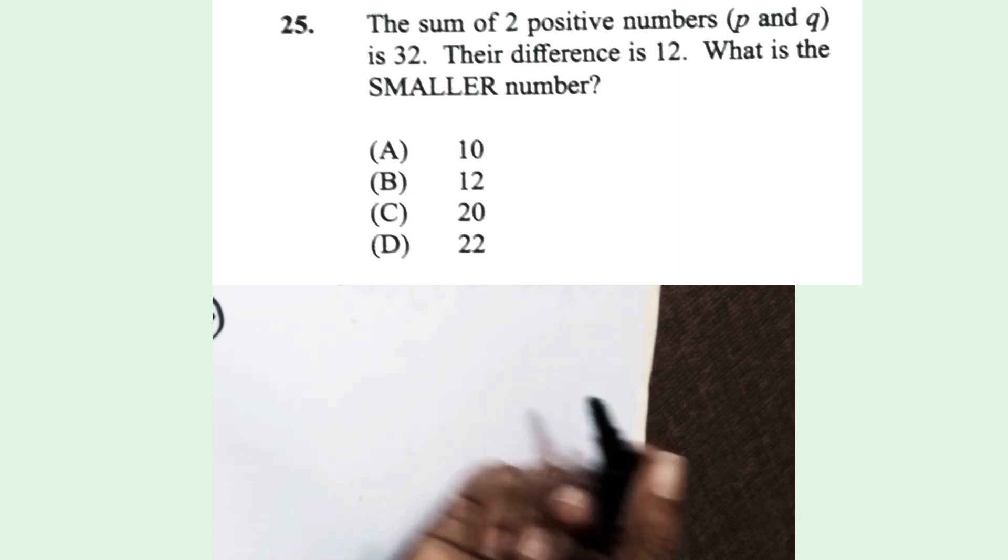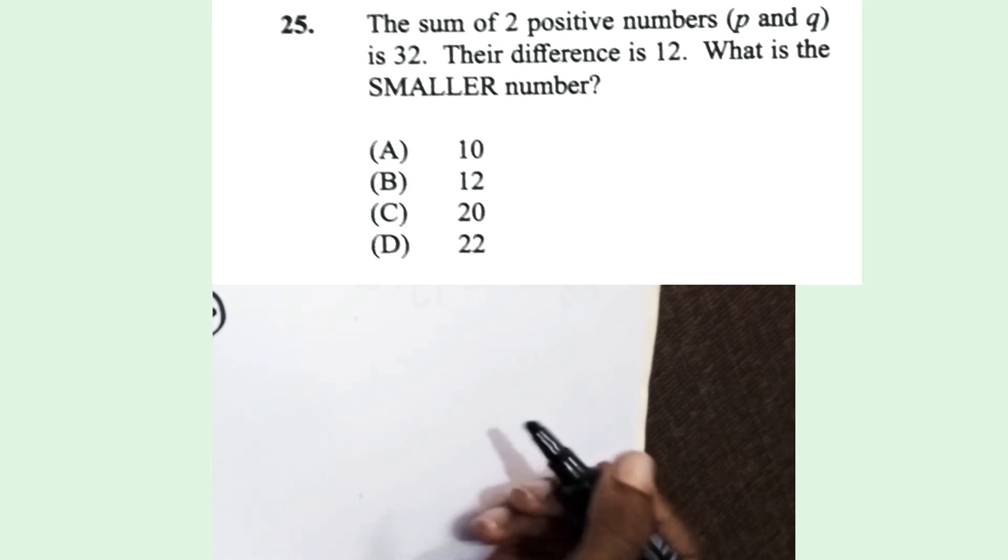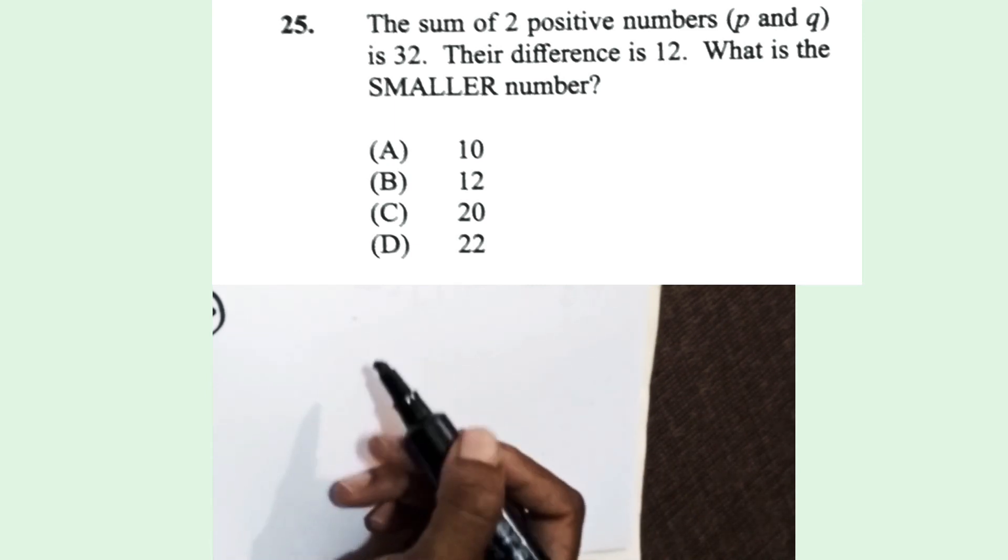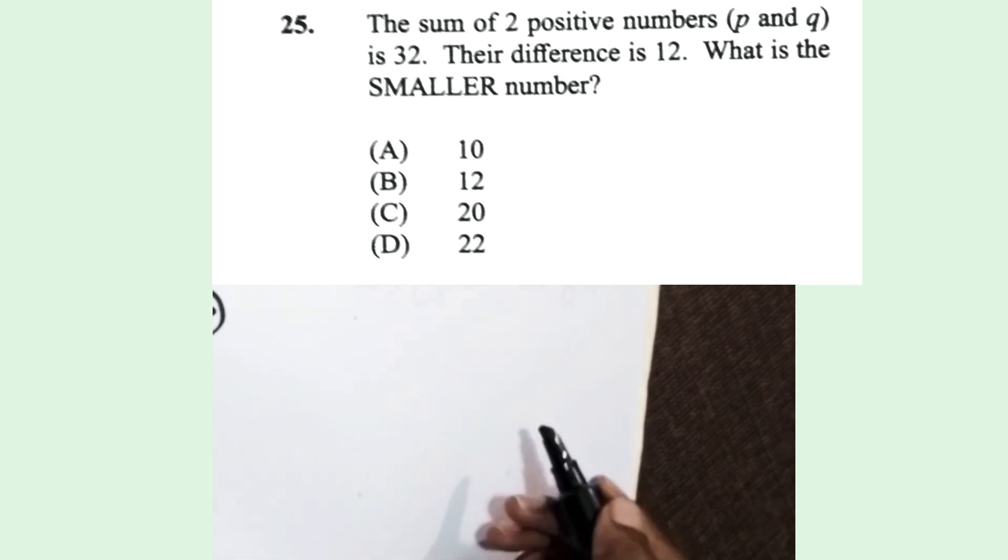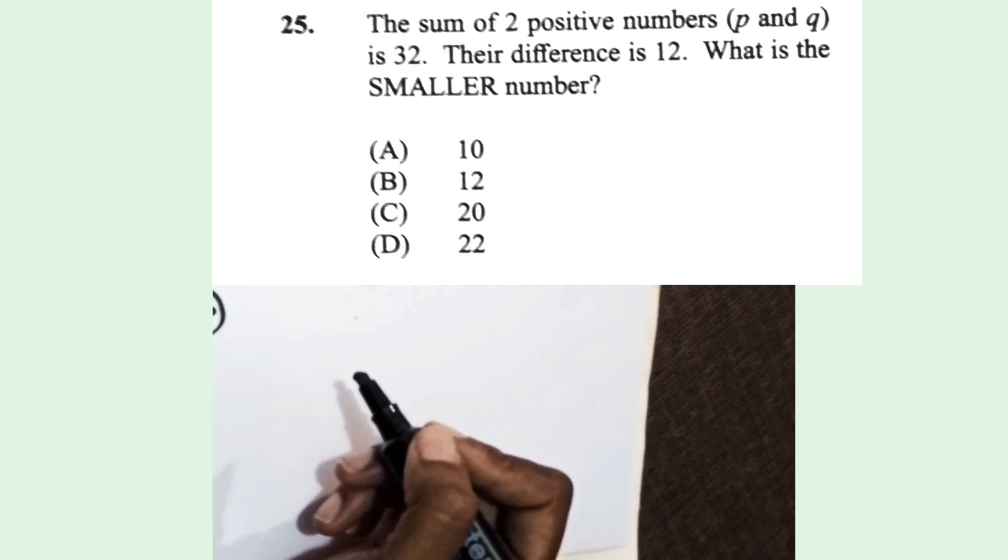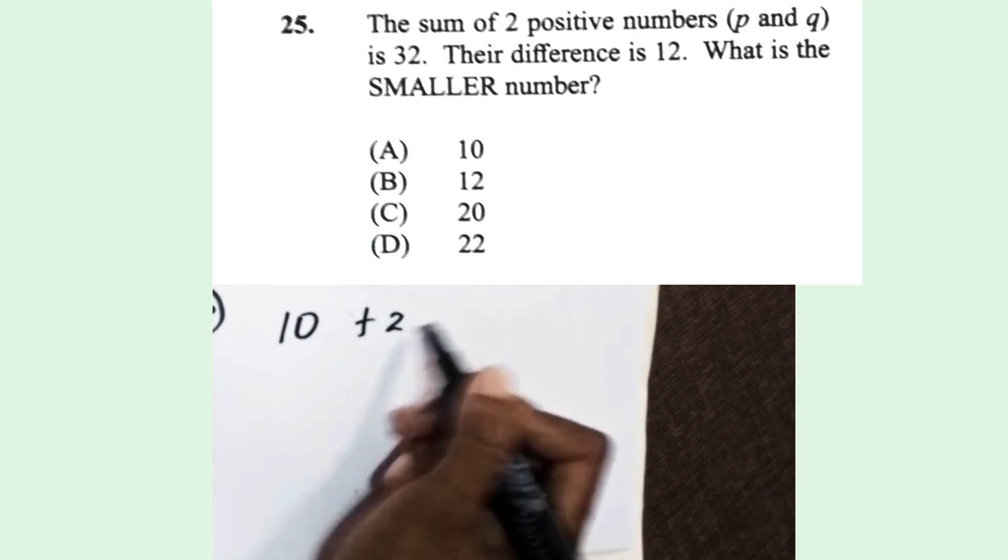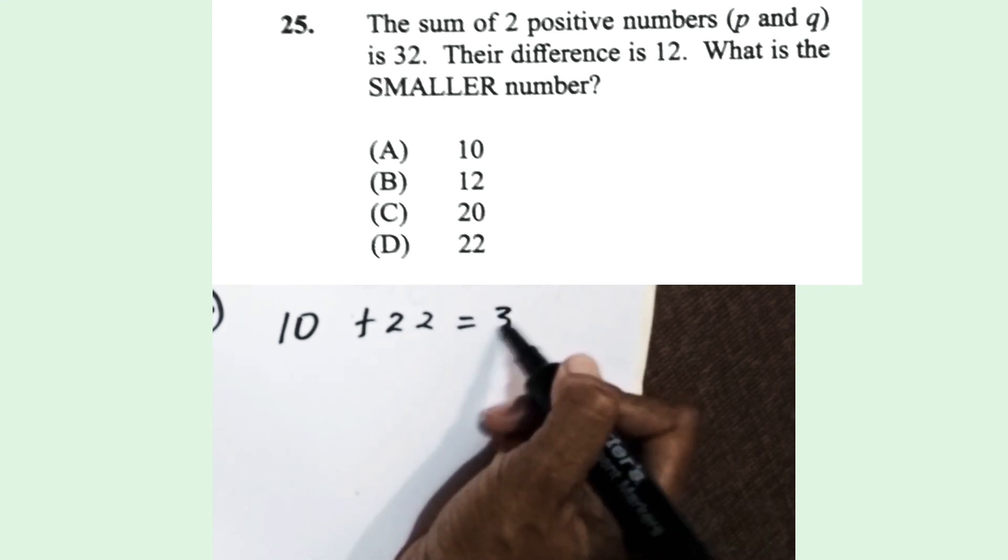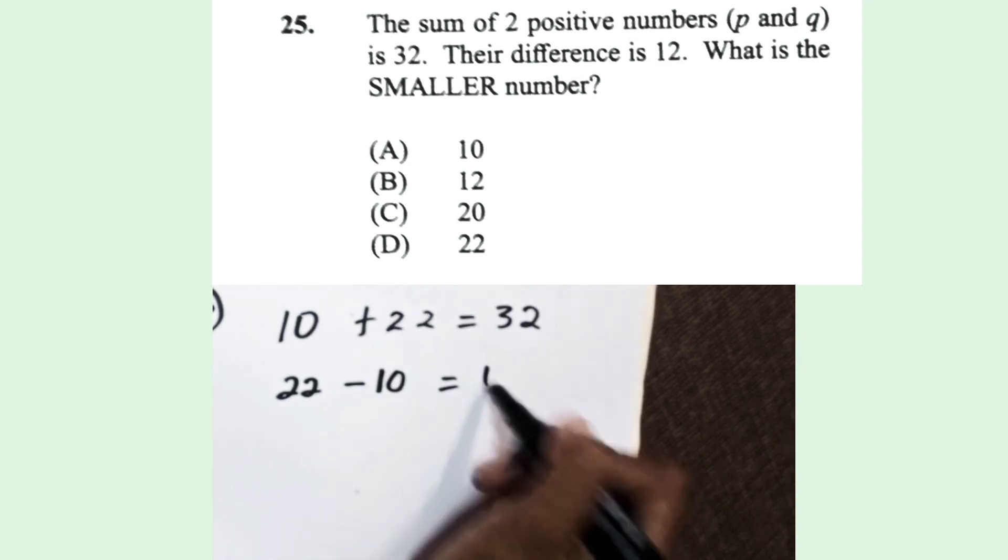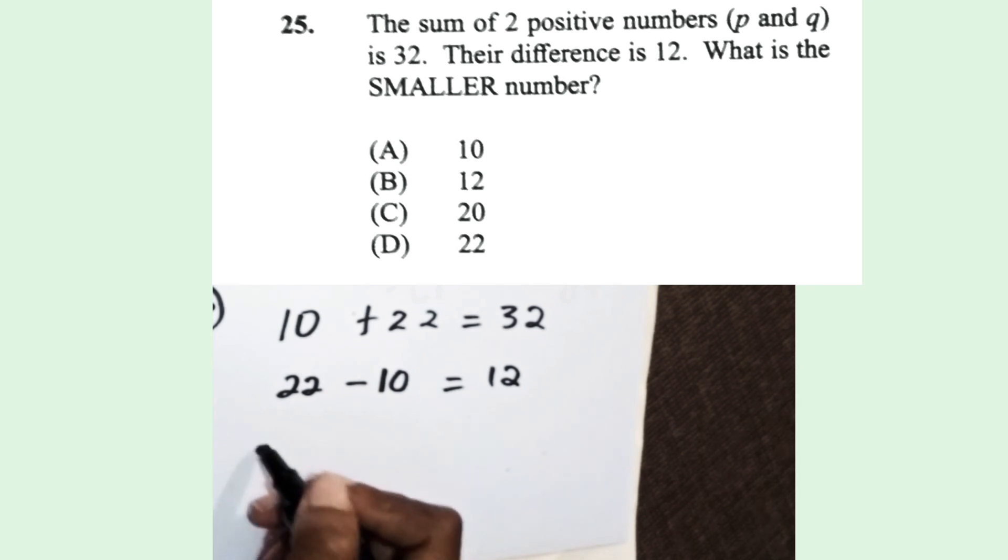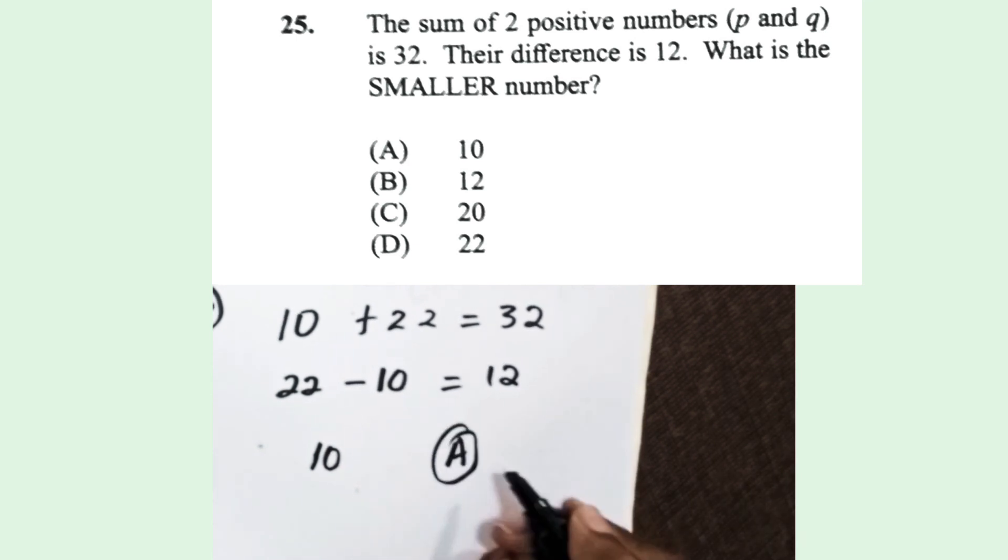Question 25. The sum of two positive numbers P and Q is 32, their difference is 12. What is the smaller number? You start to see what two numbers you add to get 32, and when you subtract them you get 12. So those two numbers would be 22 and 10. When you add them you get 32, when you subtract them you get 12. What is the smaller number of those two? The 10, so our answer is A.